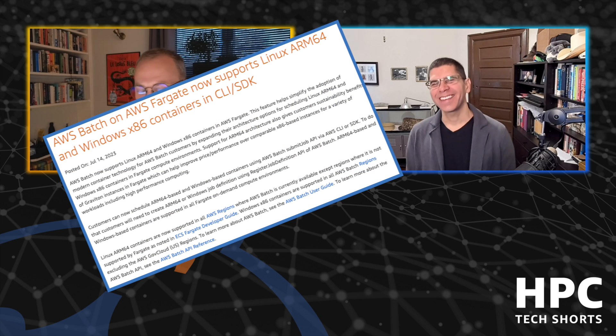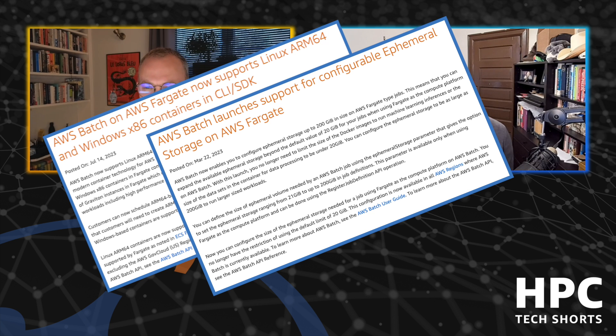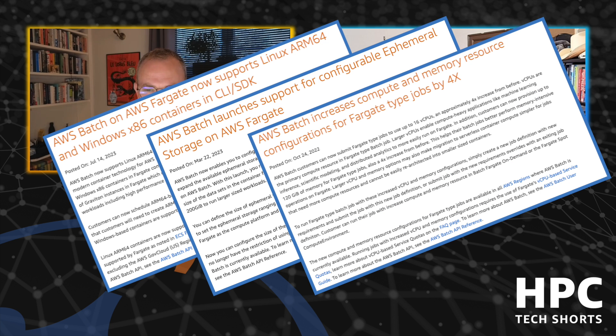We've added capabilities this year to make Fargate more useful for Batch customers, including larger task sizes. We expanded local storage from the default 20 gigabytes to a flexible local EBS volume up to 200 gigabytes that you define in your job definition. If 200 gigabytes isn't enough or you have tasks that need to share input and output, you can use Amazon Elastic File System with mount points per job definition to access specific areas of the file system, allowing jobs to share data or use bigger storage.